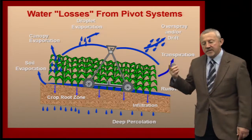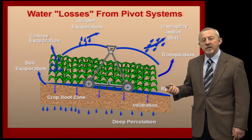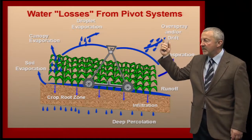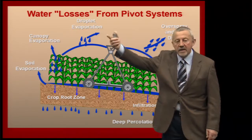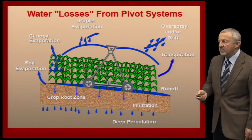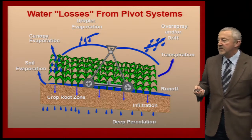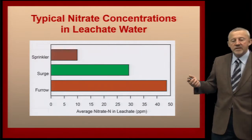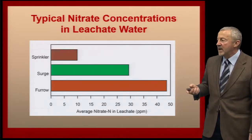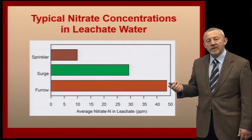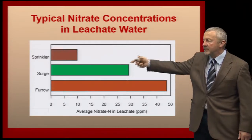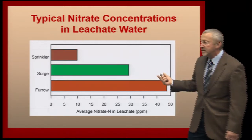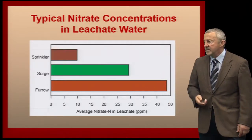Since sprinkler irrigation is one of the major ways that we apply water in Nebraska, we're going to talk about where this water goes during the water application event and what we can do to potentially conserve some of that water for future use. We're also going to talk about the typical nitrate concentrations in leachate water leaving the soil profile under different means of applying water — from sprinkler irrigation to surge furrow irrigation to standard traditional furrow irrigation systems.